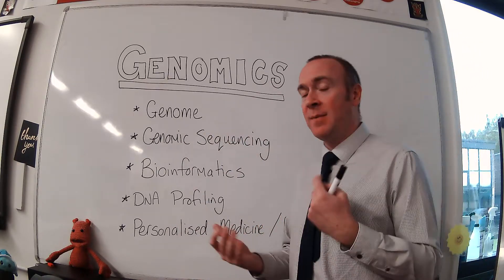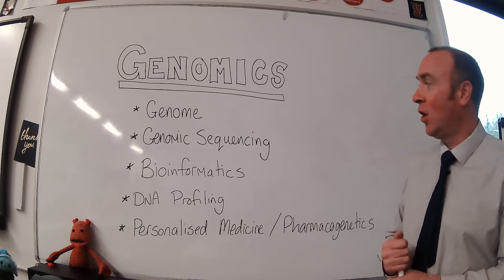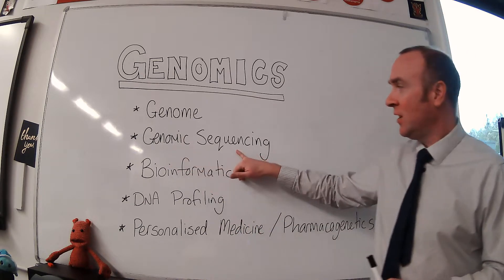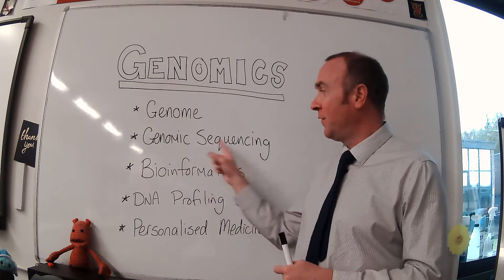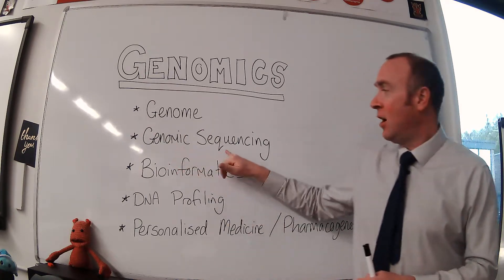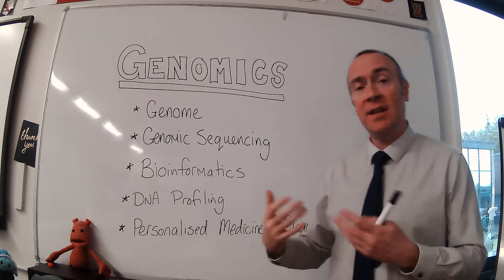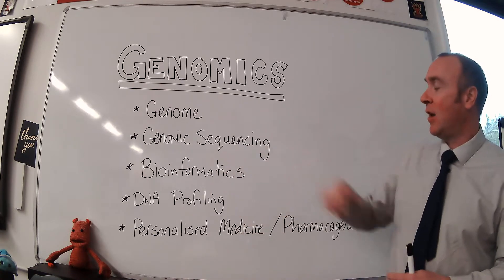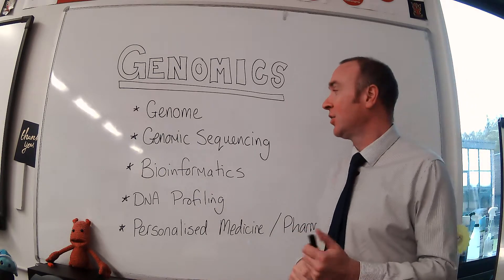Over the last maybe 10 to 20 years, we have developed a system for genomic sequencing. Genomic sequencing is somewhat self-explanatory when you know what a genome is — it's working out the sequence of bases, the A's, T's, C's and G's in a human genome, or in any organism's genome actually.